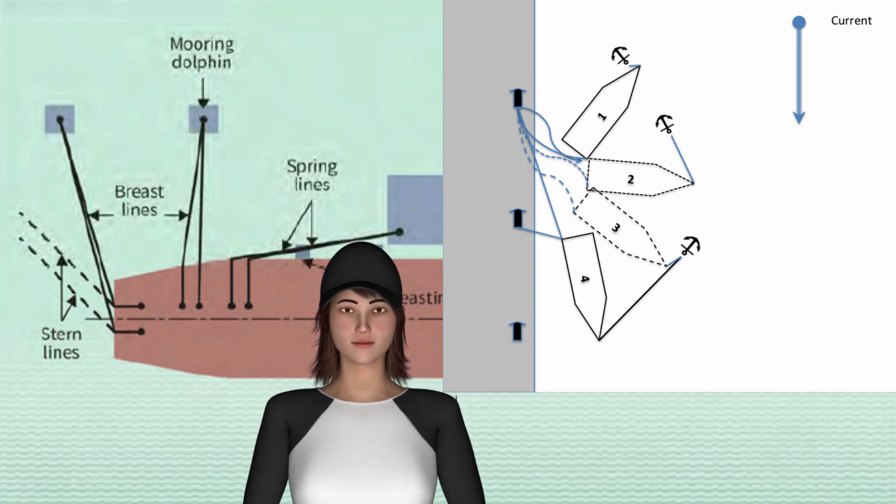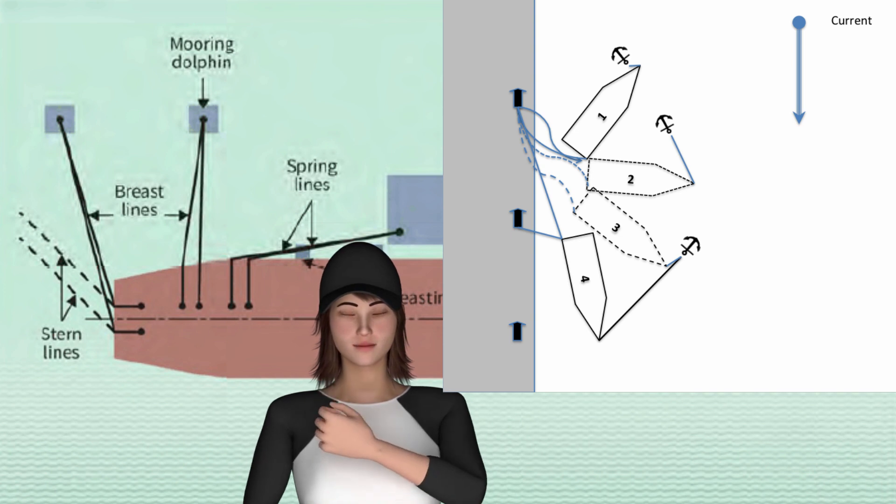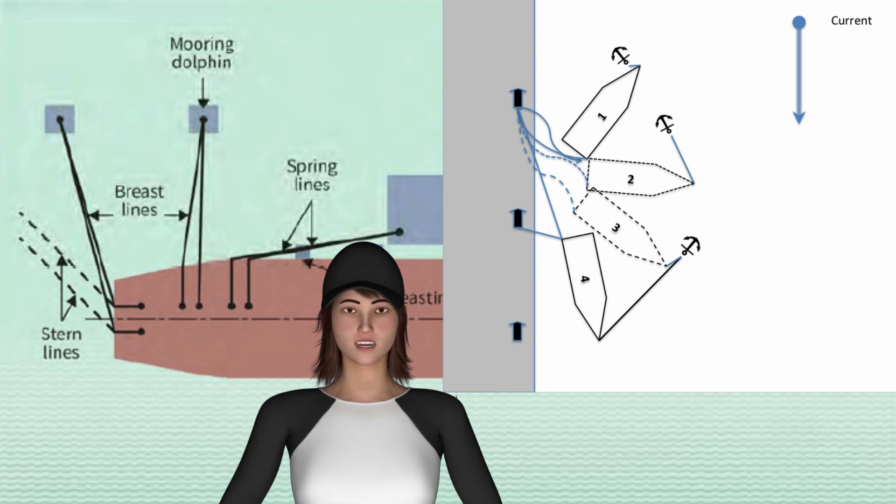Let go port anchor. When the weight is taken by the stern ropes, and then if it does not swing, weigh the port anchor and drop again as needed. Control the swing of the vessel onshore by use of the anchor.